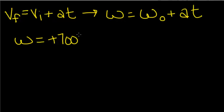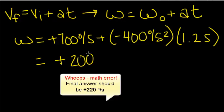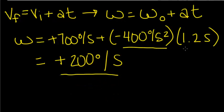We have a positive 700 degrees per second, which is the initial spinning velocity, plus a deceleration, so it's negative 400 degrees per second squared for the given time of 1.2 seconds. Now, once we compute this, we get a positive 200 degrees per second. That is the skater's angular velocity after decelerating for the 400 degrees per second squared for 1.2 seconds.